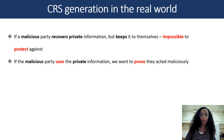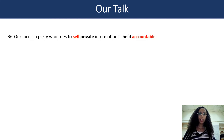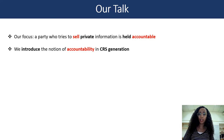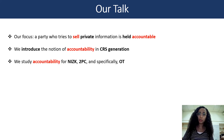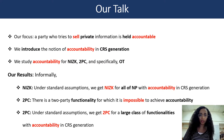But if the malicious party uses the private information, we want to do something — we want to prove they acted maliciously. In this talk, we focus on holding a party who tries to sell the private information accountable. We introduce the notion of accountability in CRS generation and study accountability for NIZK and specifically for OT. Informally, our results: for NIZK, we get NIZK for NP that satisfies accountability. For two-party computation, we have an impossibility result and also positive results showing that under standard assumptions we can get two-party computation for a large class of functionalities satisfying accountability.